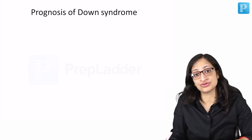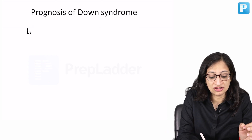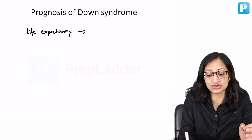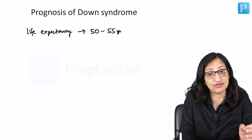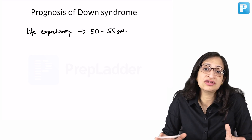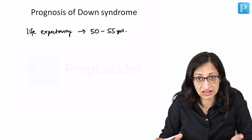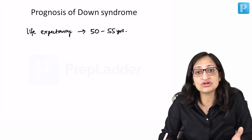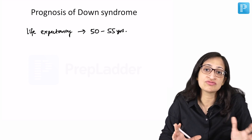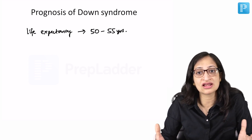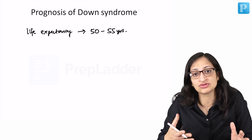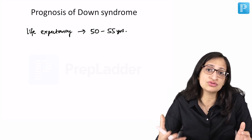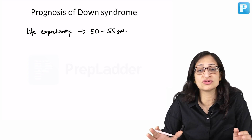Regarding the prognosis of Down syndrome — if good supportive care is given and all comorbidities are addressed, they usually have a life expectancy of around 50 to 55 years. They are usually able to do their activities of daily living, communicate with their parents, peers, and caregivers, and engage in meaningful activities. Some can be good at music or other skills, and you have to identify those skills and channelize these individuals in the right direction.